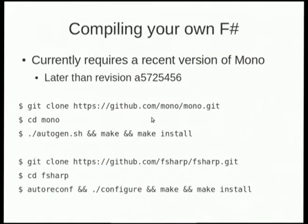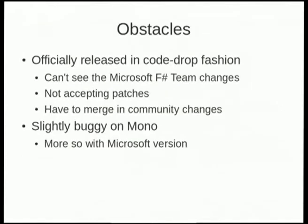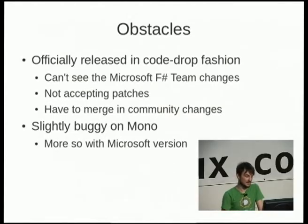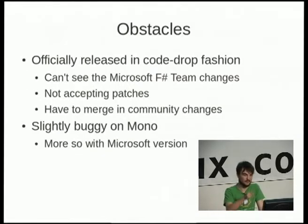To compile your own version, you need a recent version of Mono, compile it as usual, and get F-sharp from GitHub — just make install it. At the moment F-sharp is releasing in a code-drop fashion, so we can't actually see what F-sharp has done since they released it last in November, and they're not accepting patches — they're a really small team. That means when F-sharp releases a new version we have to merge back all those changes. It's slightly buggy on Mono at the moment; if you download the version from Microsoft you can run it on Linux, but it's a bit buggy. I recommend building your own version — and you can help out.